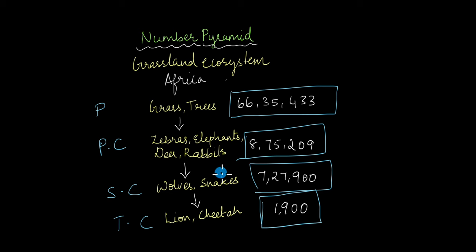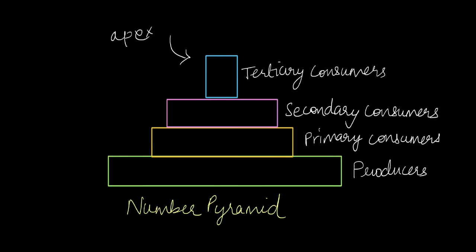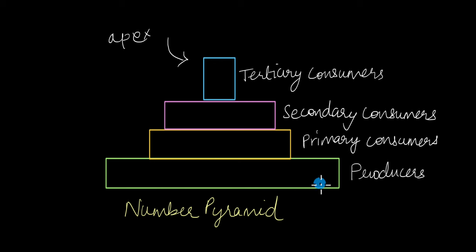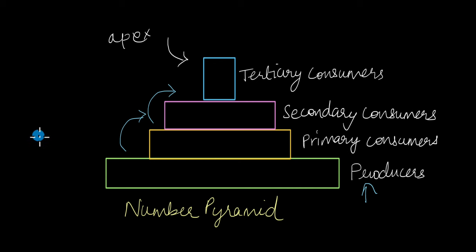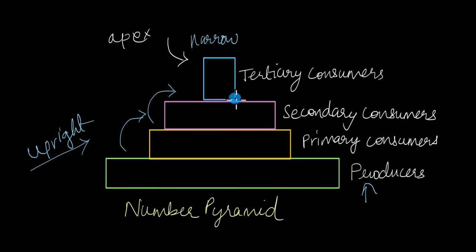If you were to take this information, make it in the form of a bar graph, and stack it starting with producers, you would get a number pyramid. The number pyramid shows that producers are highest in number in the grassland ecosystem, and as we go up each trophic level the number of individuals decreases, which is why it is an upright pyramid — the base is broad and the apex is narrow. This does not take into account animals that occupy two different trophic levels, which is one of the shortcomings of ecological pyramids.